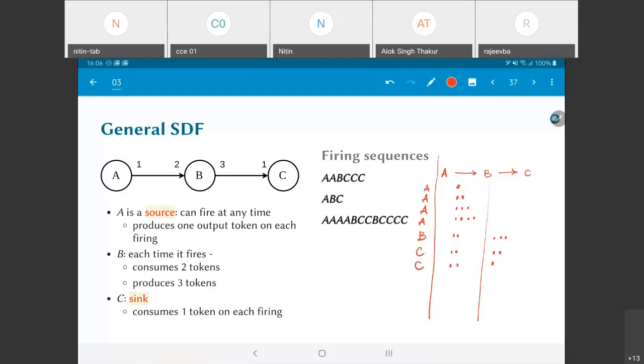According to this sequence, B is supposed to fire again. What happens when B fires this time? It's going to consume the remaining two tokens from the A to B edge and produce three more tokens onto the B to C edge.